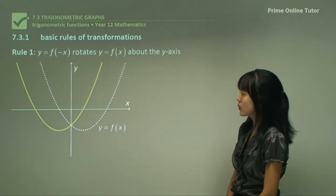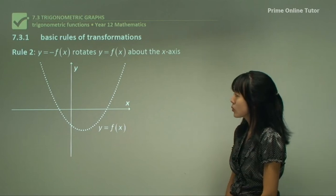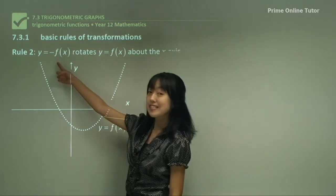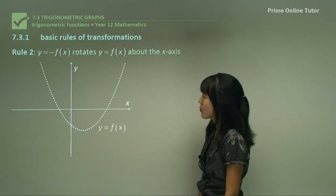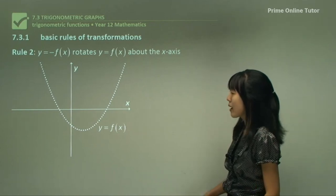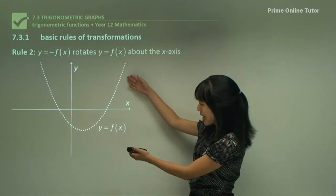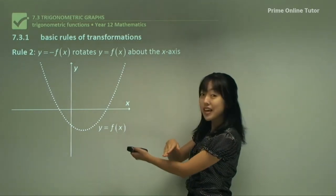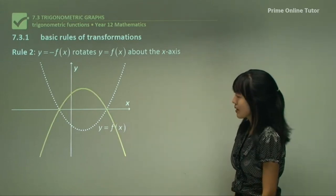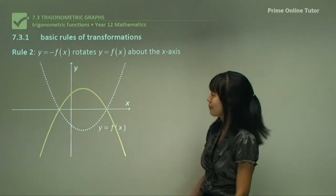Now let's see what rule two is all about. Rule two is when the negative is outside the f of x. When the negative is outside, what happens is that this f of x would rotate about the x-axis. It would look something like this.